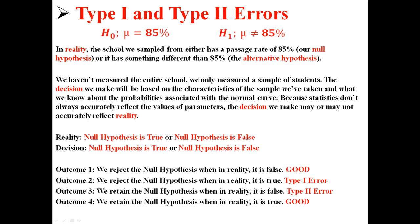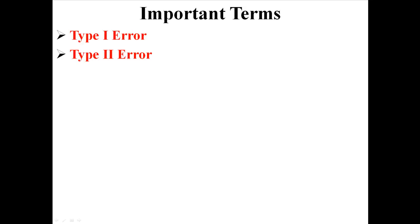The final outcome is that we retain the null hypothesis when, in reality, it is true — we say it's true when it actually is, so that's another good outcome. So there are two good outcomes, and then there's the type 1 error, which is rejecting when you shouldn't, and the type 2 error, which is not rejecting when you should. Those are the two mistakes — that's what type 1 and type 2 errors are and what it means to make them.